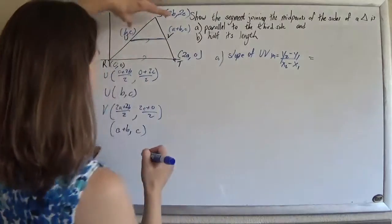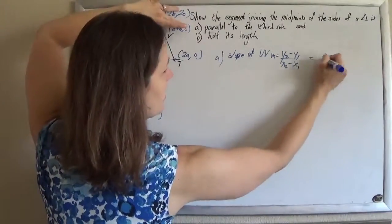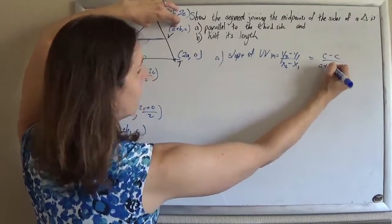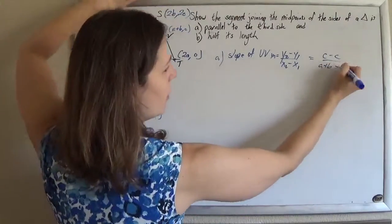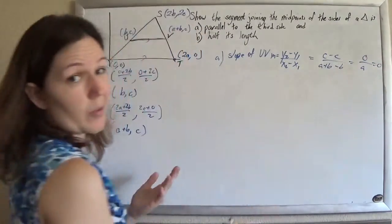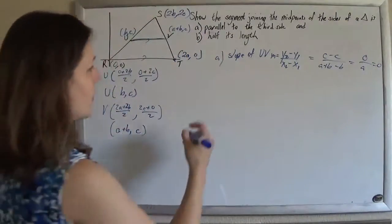So uv, if you subtract the y's, it's c minus c. And if you subtract the x's, it's a plus b minus b. So you're getting 0 over a, which is just 0. It's horizontal. It's not very exciting.